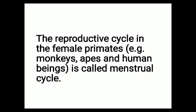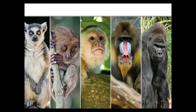Today we will discuss a very important topic - the menstrual cycle. This important phenomenon is only seen in females. The reproductive cycle in female primates, for example monkeys, apes, and human beings, is called the menstrual cycle. This reproductive cycle is only seen in female primates.